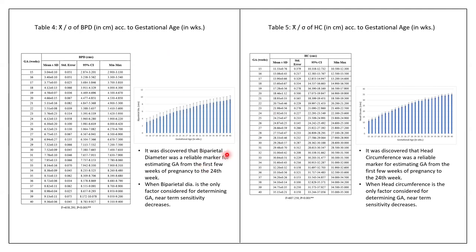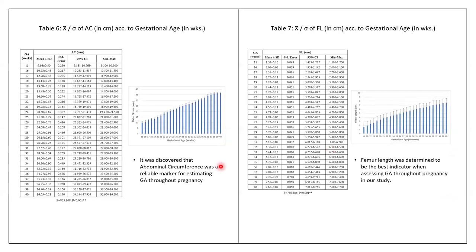It was discovered that biparietal diameter was a reliable marker for estimating gestational age up to the 24th week; however, when BPD is the only factor considered, near-term sensitivity decreases. Similarly, head circumference was a reliable marker up to 24 weeks, with decreased near-term sensitivity if used alone. Abdominal circumference was also a reliable marker for estimating gestational age throughout pregnancy. Femur length was seen to be the best indicator for assessing gestational age throughout pregnancy in our study.